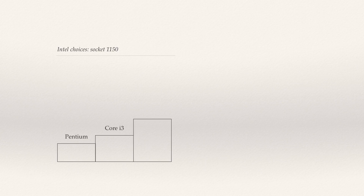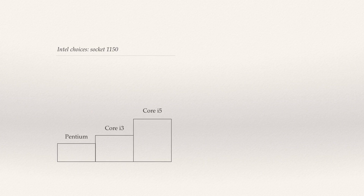Moving up again, you have Core i5 processors. They are high performance with slightly higher power draw and a decent integrated graphics processor. They are really a sweet spot for gamers and are great for gaming when paired with a good graphics card — something we'll be talking about in another episode.